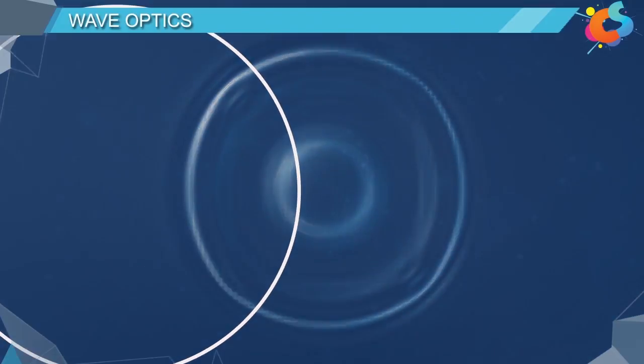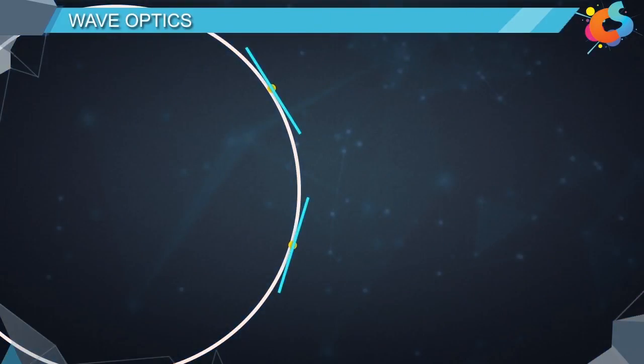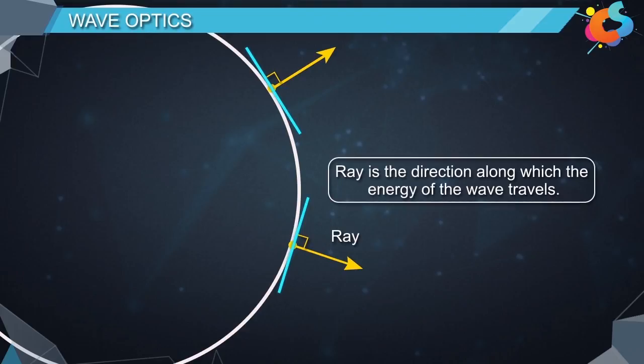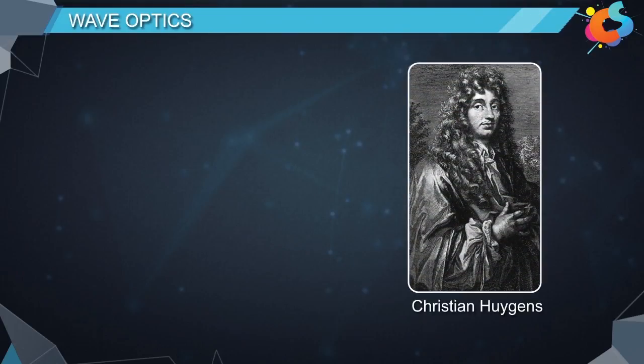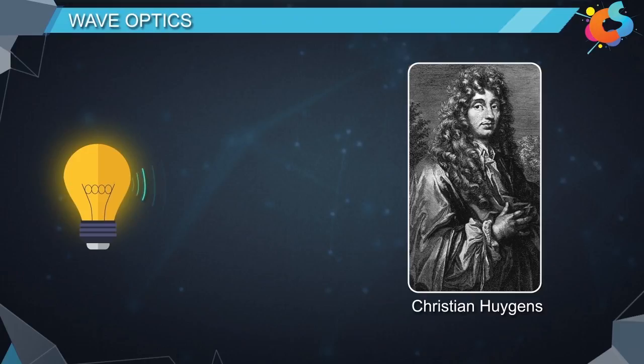Now, draw a tangent at a point on the wave front. Then, a line drawn perpendicular to the tangent at that point is called a ray. The ray is the direction along which the energy of the wave travels. Christian Huygens applied the same theory to the light and proposed that light travels in the form of waves.